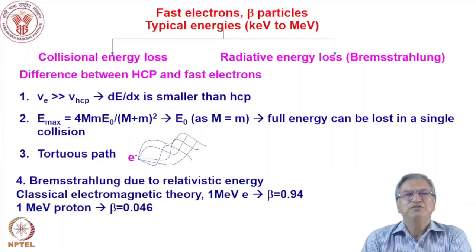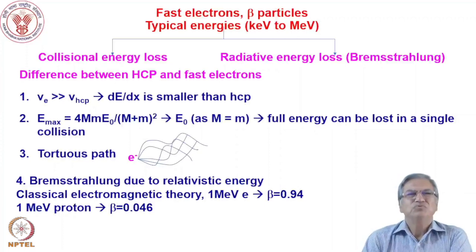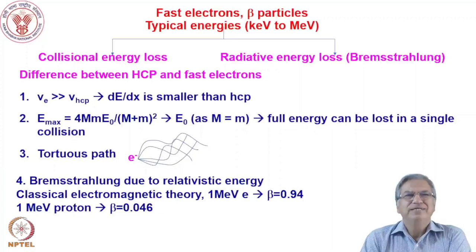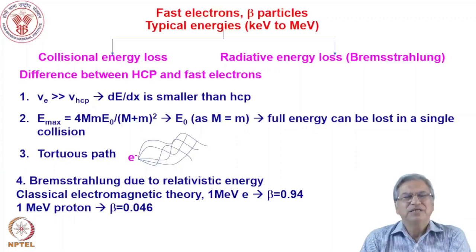Let us discuss the major differences between the interaction of heavy charged particles and fast electrons. First, the velocity of electrons is much higher than that of heavy charged particles for the same energy in the keV to MeV range. Because of that, the stopping power for fast electrons, dE/dx, is much lower. Velocity appears in the denominator of the stopping power formula, so higher velocity means lower stopping power, grossly speaking.